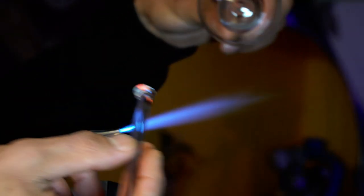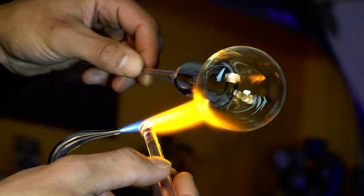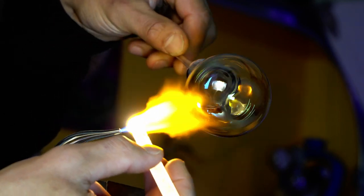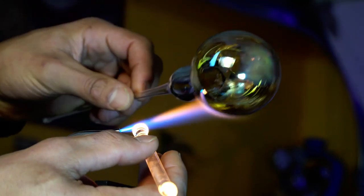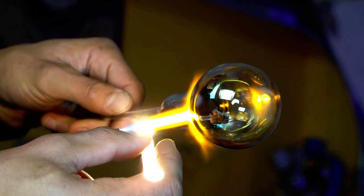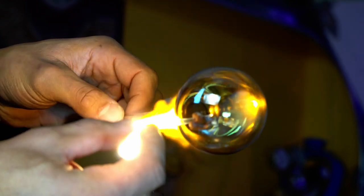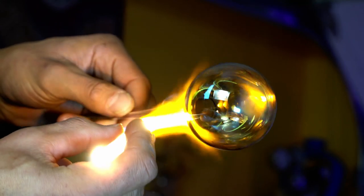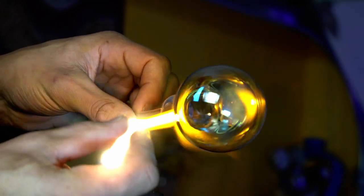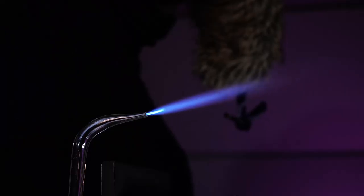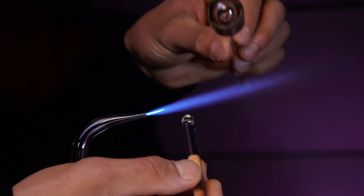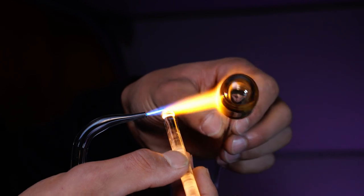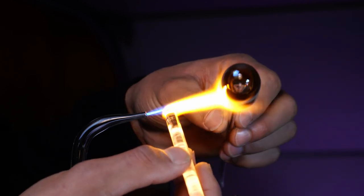And now we'll bring it into that slightly reducing flame, rotating our glass evenly that we're applying it to. And you can see I'm going back and forth with the silver. This actually allows it to vaporize easier within the flame. Here's an example of what one might call over-fuming. Now there are definitely applications for this as well, but this is a very heavy coat.